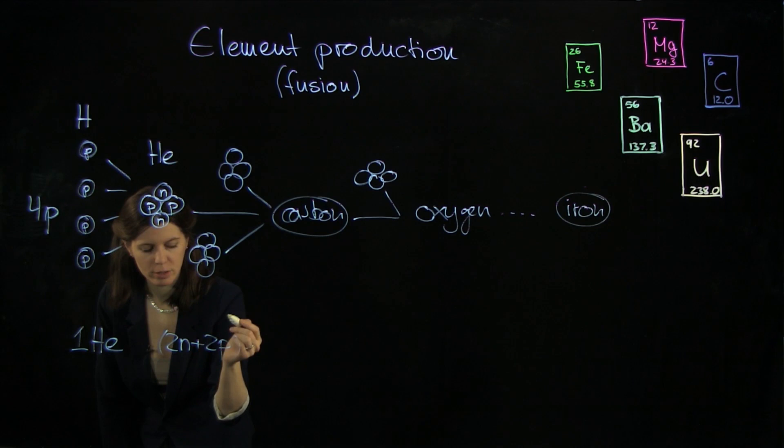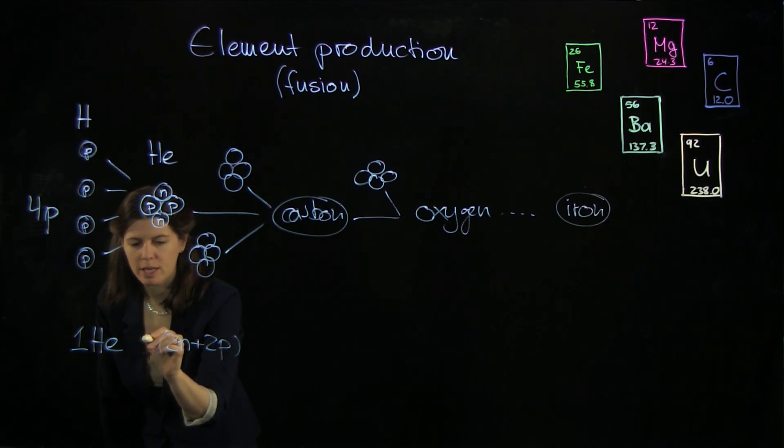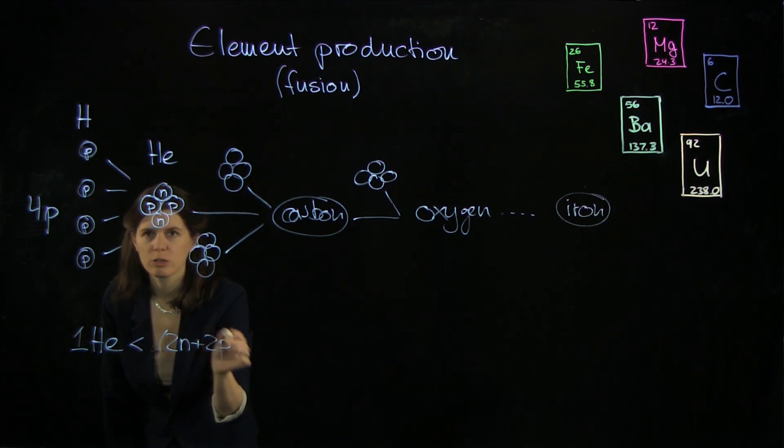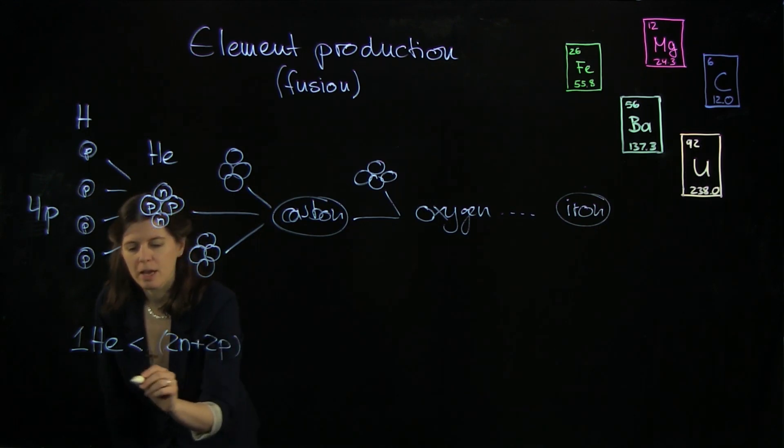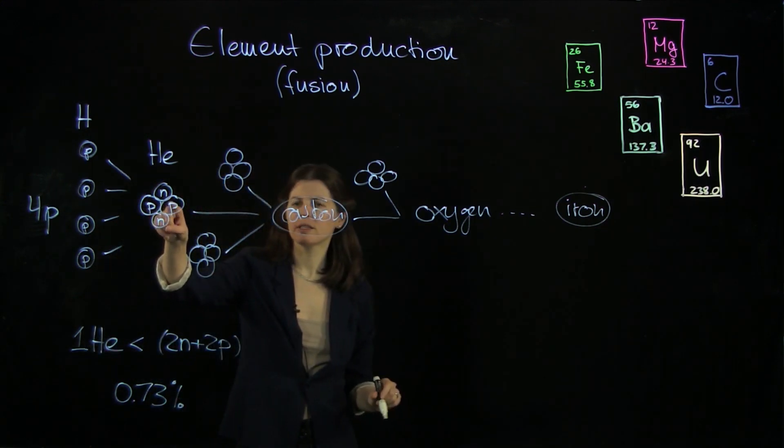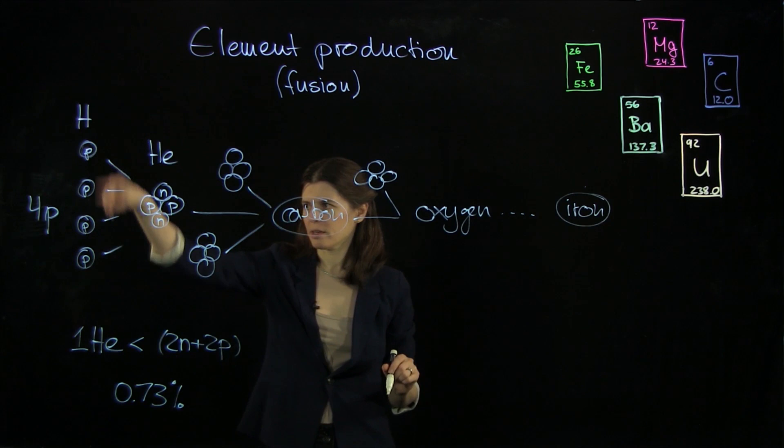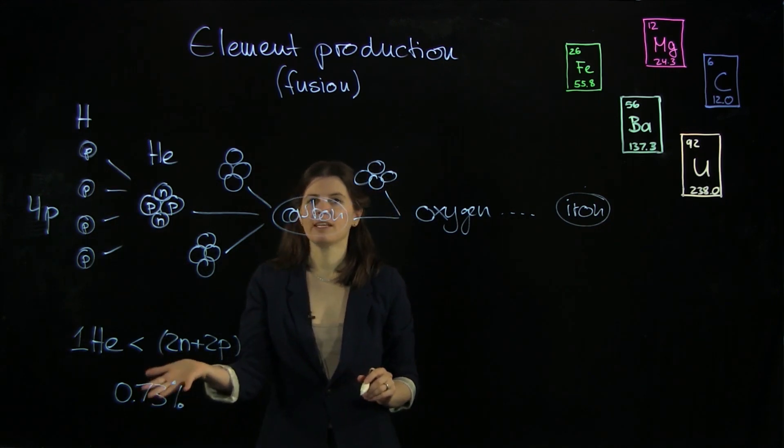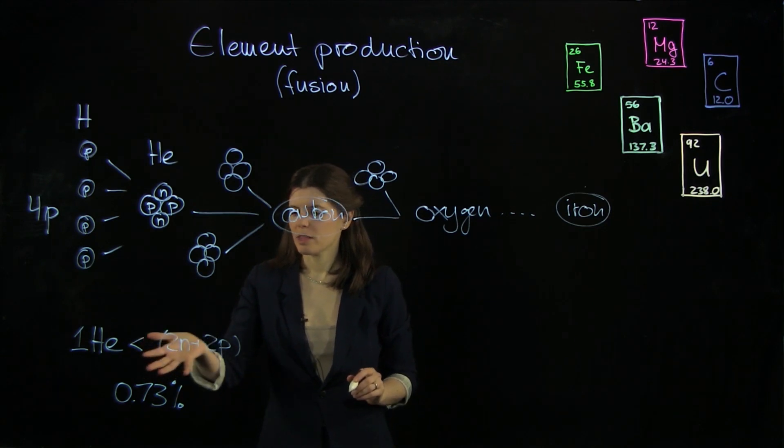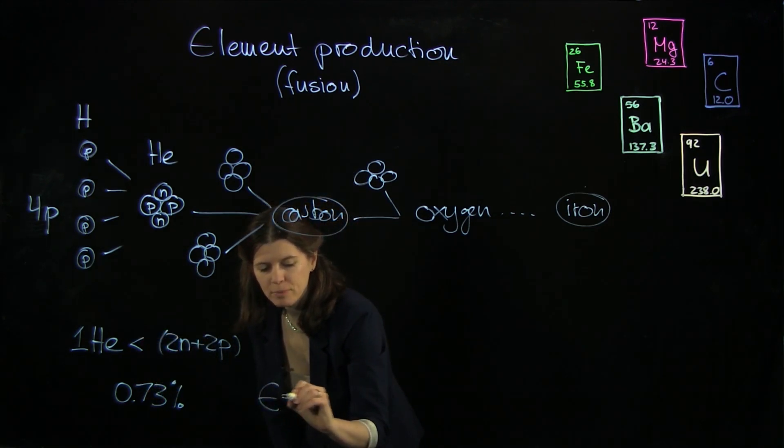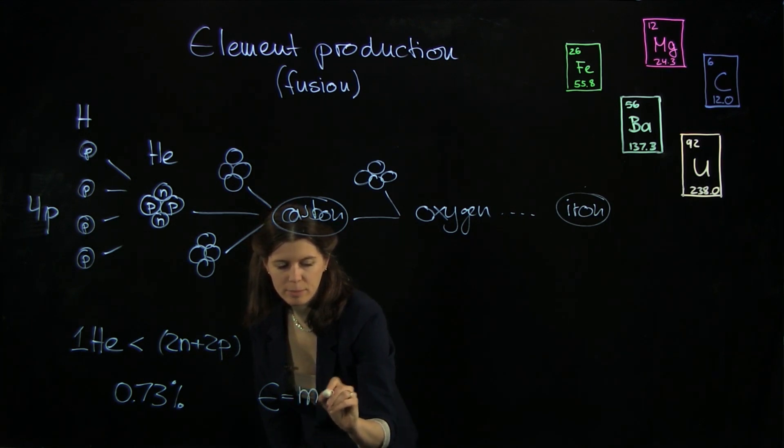we're going to find out that the helium nucleus actually weighs a little bit less than my initial constituents here. And actually, it's 0.73 percent that our final helium nucleus here weighs less than these constituents. And that's really fantastic. So this is called a mass defect.